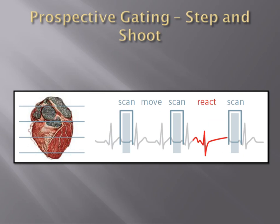Taking this a step further: since the sweet spot is the end-diastolic window, and we really aren't going to use the other phases — like the systolic phase with its motion artifact — for coronary imaging, instead of just reducing beam intensity during those other periods, what if we simply turned the beam off altogether? This way, we'd only be radiating the patient during that end-diastolic sweet spot, affecting even greater dose savings.